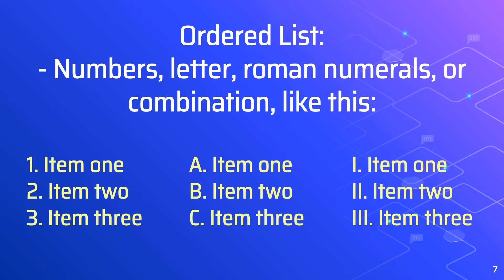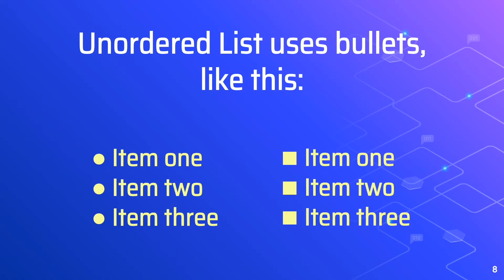So there are examples here that you can see. An unordered list is one that uses bullets like this — there's circle and square bullets.